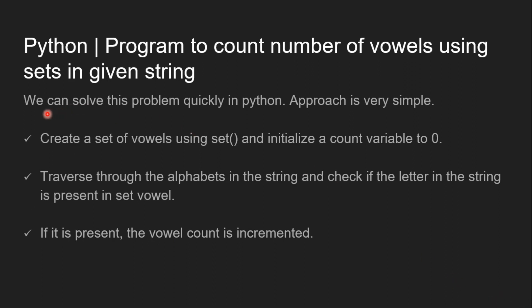The approach is to create a set of vowels using set method and initialize a count variable to 0. Then we will traverse through the alphabets in the string and check if the letter in the string is present in set vowel. If it is present, the vowel count is incremented.